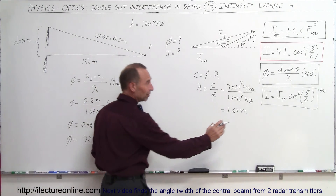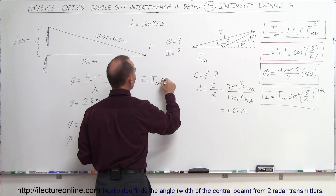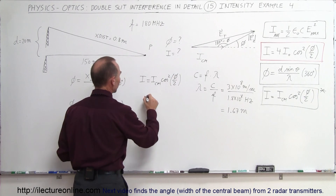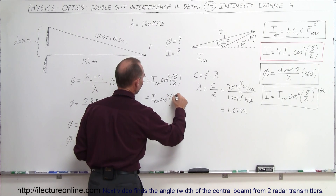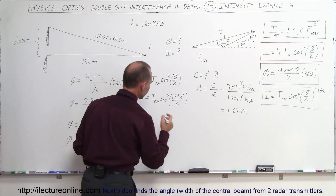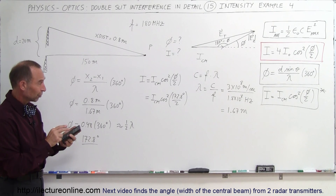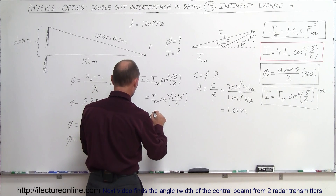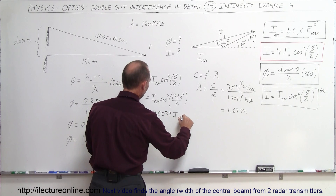Now we use the intensity equation: I equals I_central_max times cosine squared of half the phase difference. So I equals ICM times cosine squared of (172.8° / 2) = cosine squared of 86.4°. The cosine of 86.4° is very small, and squaring it makes it even smaller. This gives us I equals 0.0039 times ICM.